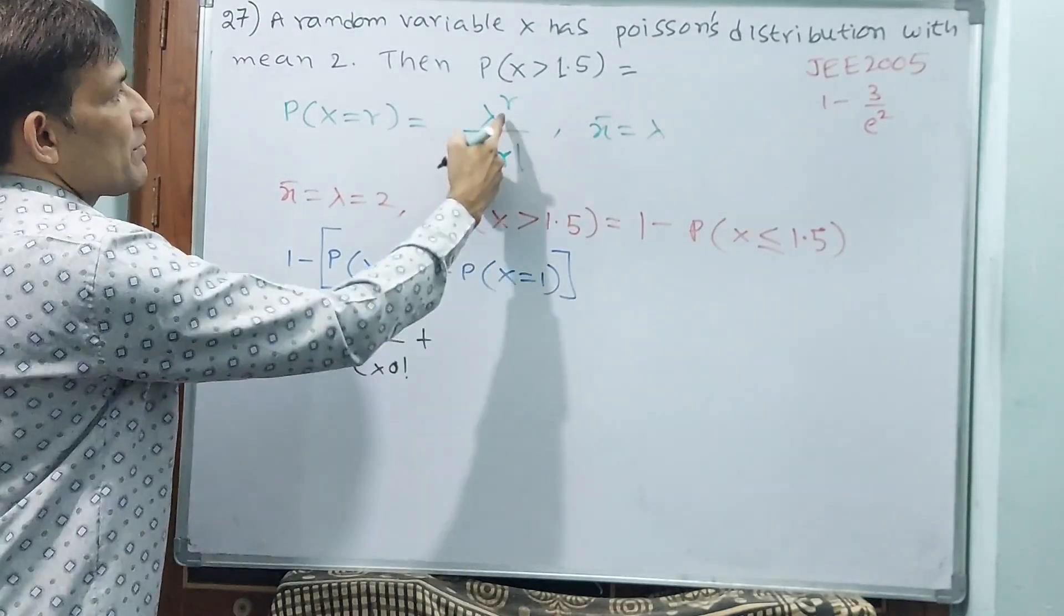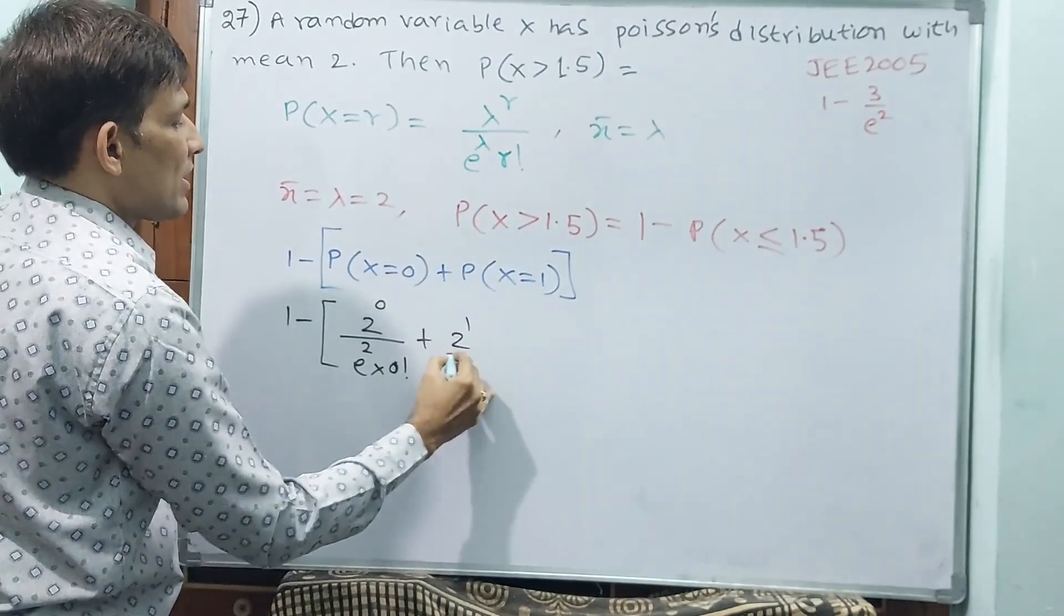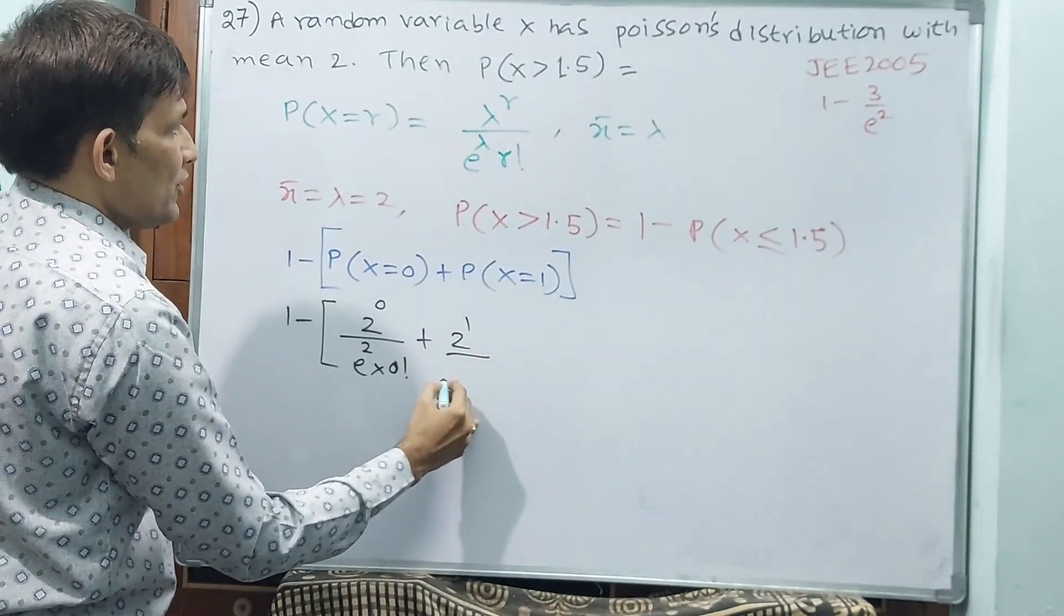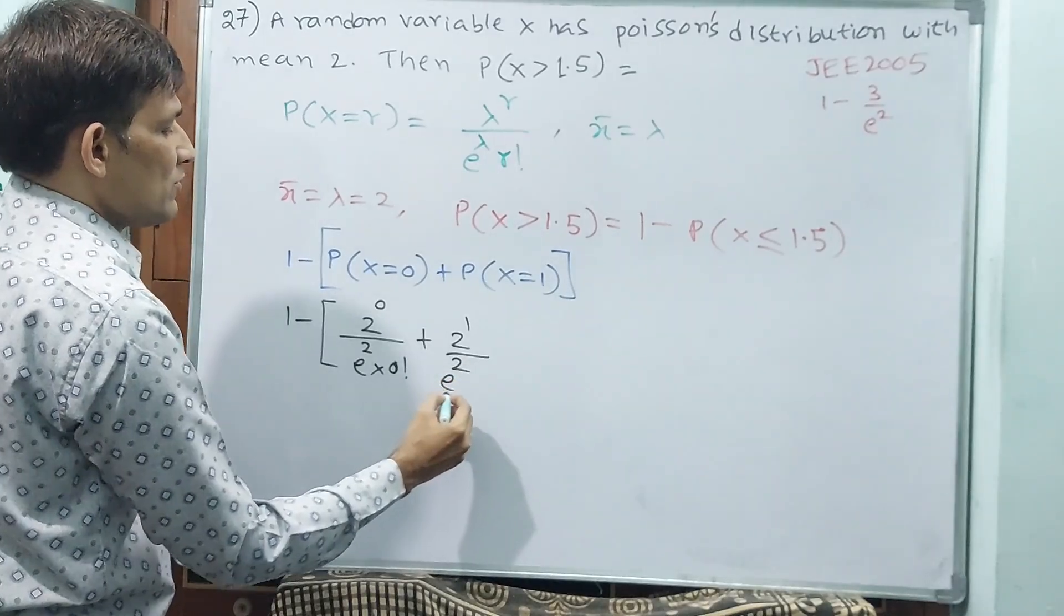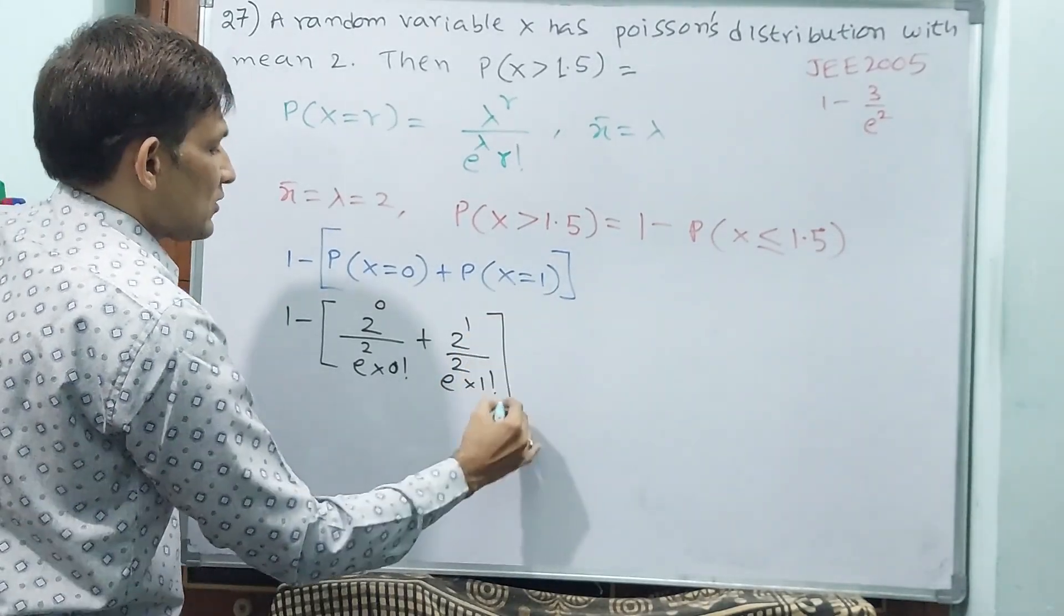Now, r is 1. That means, lambda power 1. 2 power 1 divided by e power lambda is standard. e power 2 into 1 factorial. 1 factorial is also 1.